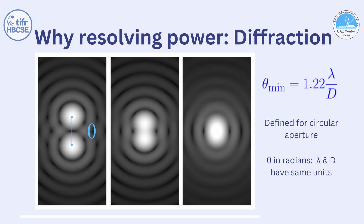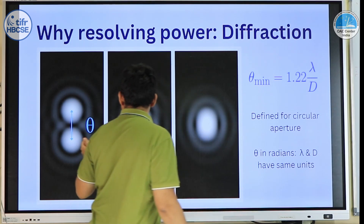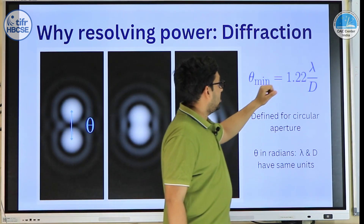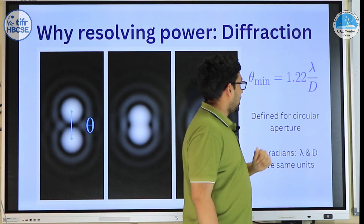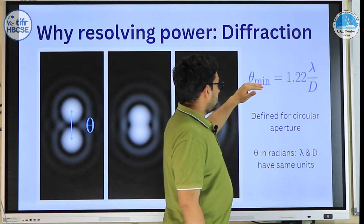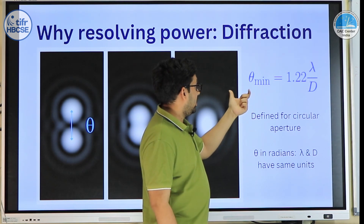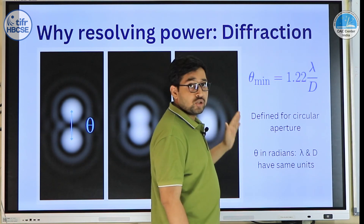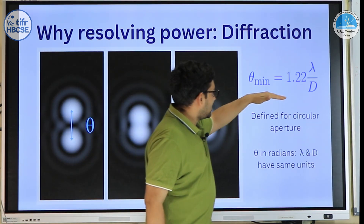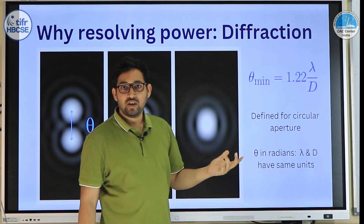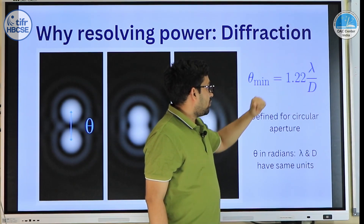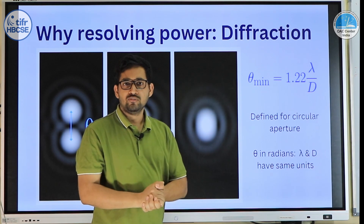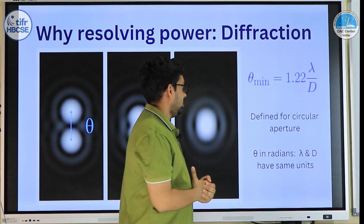The minimum angular separation that allows us to resolve two sources is given by the Rayleigh criterion. The formula is: θ = 1.22 × λ / D, where λ is the wavelength of light — assuming monochromatic light — and D is the diameter of the aperture. Note that this formula gives resolving power in radians, and λ and D must be in the same units. The factor 1.22 applies only to a circular aperture — a common student question — and it changes for other aperture shapes.